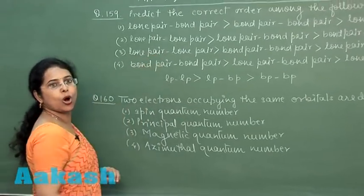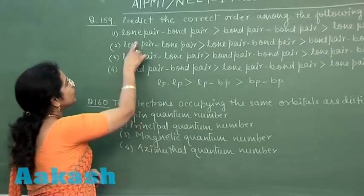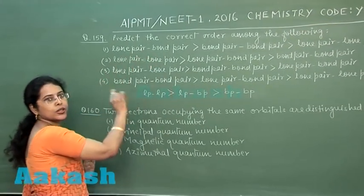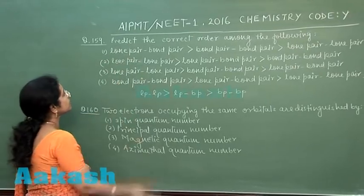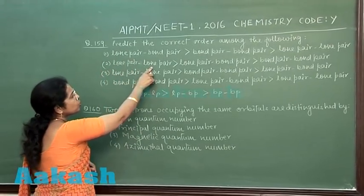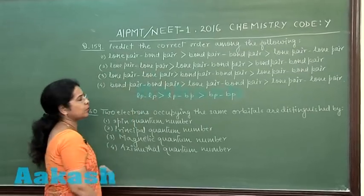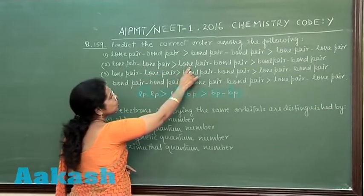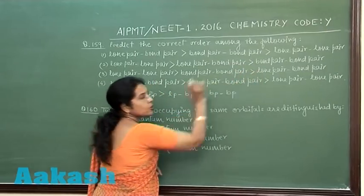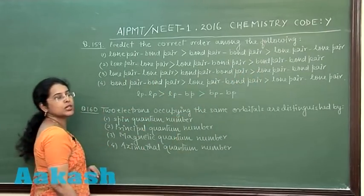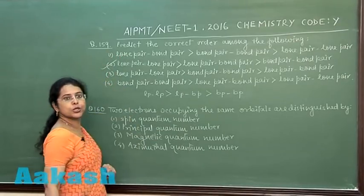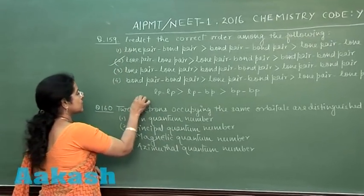Evaluating the options: the first option states lone pair–bond pair repulsion is strongest, which is incorrect. The second option correctly states lone pair–lone pair repulsion is strongest, followed by lone pair–bond pair, and bond pair–bond pair is the weakest. So option two is the correct answer.